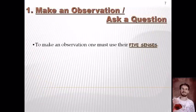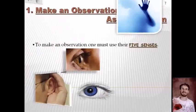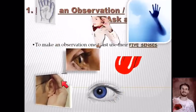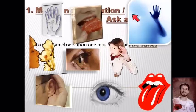Step one: to make an observation, you're going to use your five senses. Take a moment to think of all five. We have hearing, sight, taste, touch, and smell — those are your five senses.